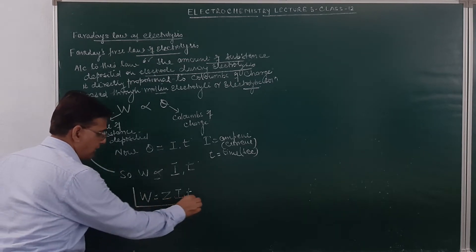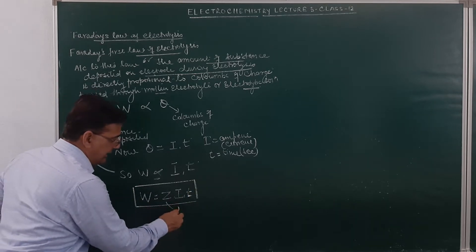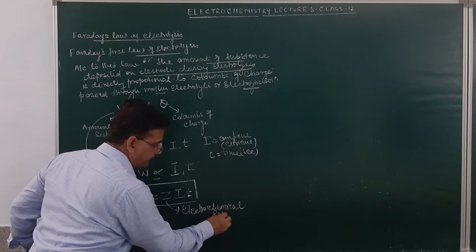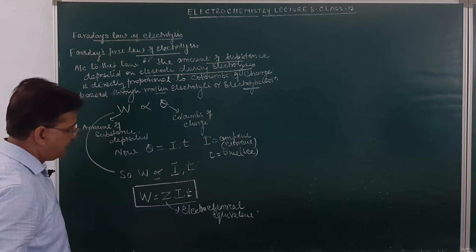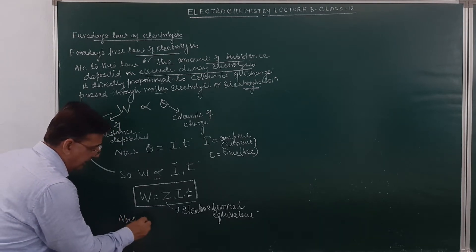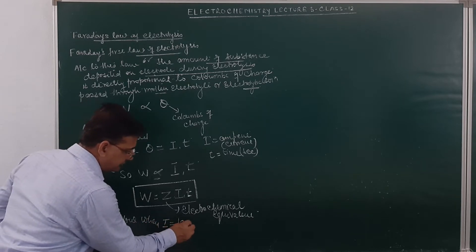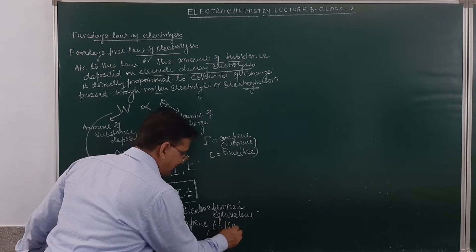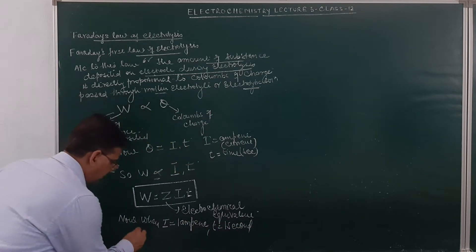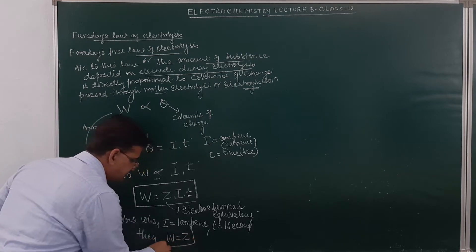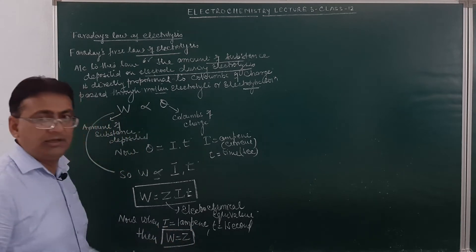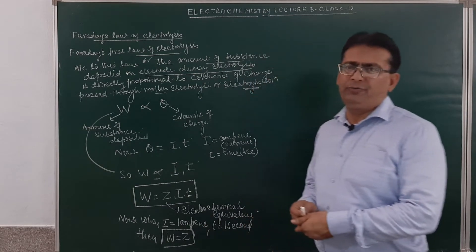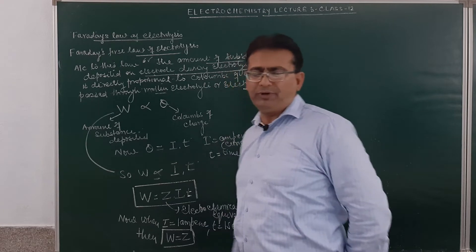Remember this formula. This Z is a constant and it is called the electrochemical equivalent. When I = 1 ampere and T = 1 second, then W = Z. So Z is defined as the amount of substance deposited when one ampere current is passed for one second.